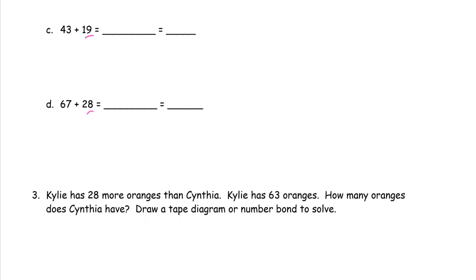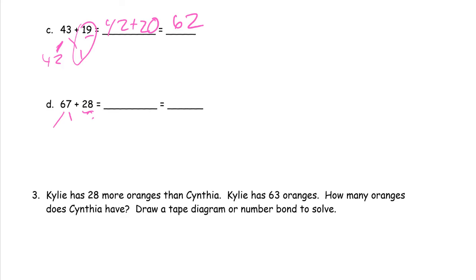Forty-three plus nineteen — this nineteen is almost a twenty. So we need one more to make it a twenty, and we get it from the forty-three, leaving forty-two. We add forty-two and twenty, which is sixty-two. For twenty-eight plus sixty-seven: we only need two more to make twenty-eight a thirty. That two comes from the sixty-seven, leaving sixty-five. Because sixty-five plus two is sixty-seven — it's a number bond. So that's thirty plus sixty-five, which is ninety-five.